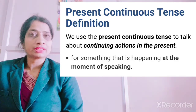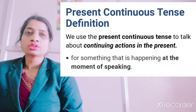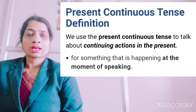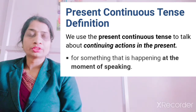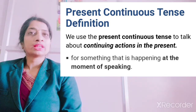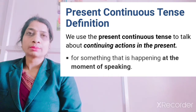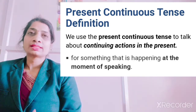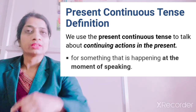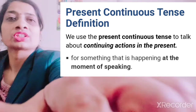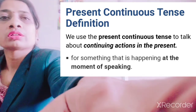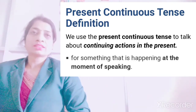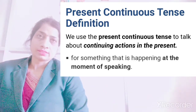Matlab woh action complete nahi hua hai, woh chal raha hai. For example, like 'I am teaching' — mein abhi aapko padha rahi hoon, toh yeh jo action jo mein kar rahi hoon, yeh chal raha hai. It is not completed. And similarly, 'you are studying' — that action is also continuing. So that is also present continuous tense.